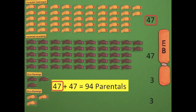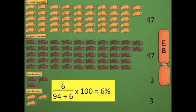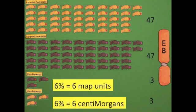Let's say we count the number of parentals versus non-parentals in our example cross. We might count 94 parentals and 6 non-parentals. Therefore, 6% of the total number of F2 flies are non-parentals.